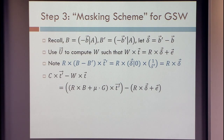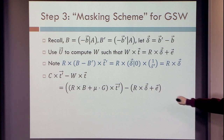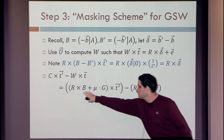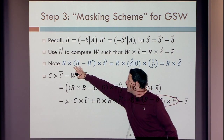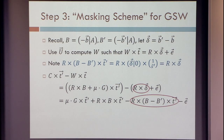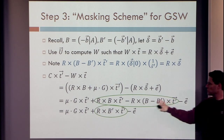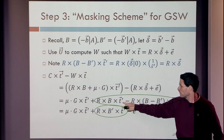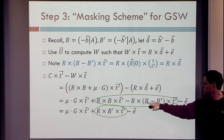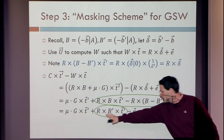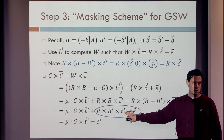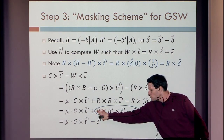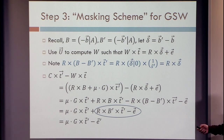Now let's see what we get by C times T prime minus W times T. W times T is that thing by design. C times T prime: this is C and this is T prime. R times delta is the same as R times (B minus B prime) times T prime. Now C times T prime plus R times (B minus B prime) times T prime — we have R times B times T prime here and R times (B minus B prime) times T prime, so when you add them up you get R times B prime times T prime. And B prime times T prime is just the public key times the secret key, so it's small, and R is a 0-1 matrix so it's small — altogether a small error. Multiplying the ciphertext by the wrong key and adding the correction factor, we get the right answer.